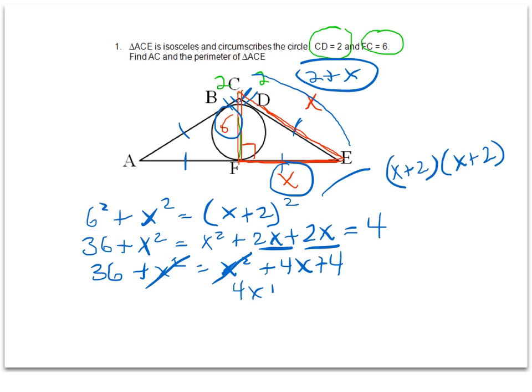And now we're left with 4X plus 4 equals 36, and we can go ahead and solve for X. We'll get 4X equals 32 or X equals 8.